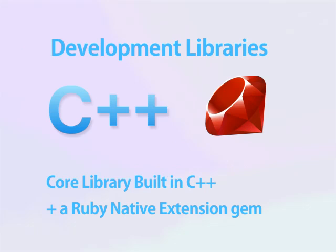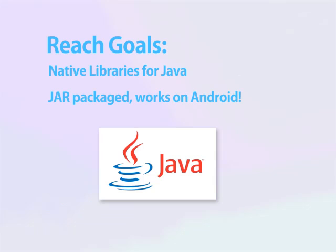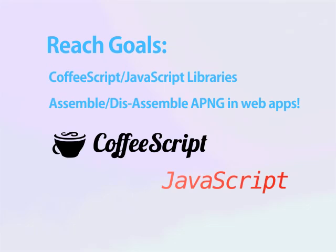These libraries will be enhanced versions of Apengasm built in C++ with Ruby ports. The stretch goals will have a Java native version and a CoffeeScript and JavaScript native version so that it can be used in different places.